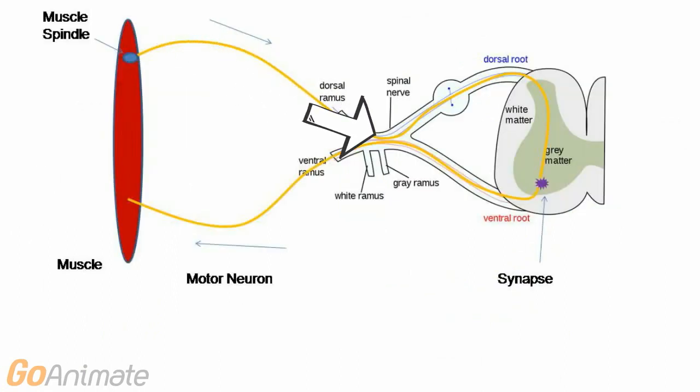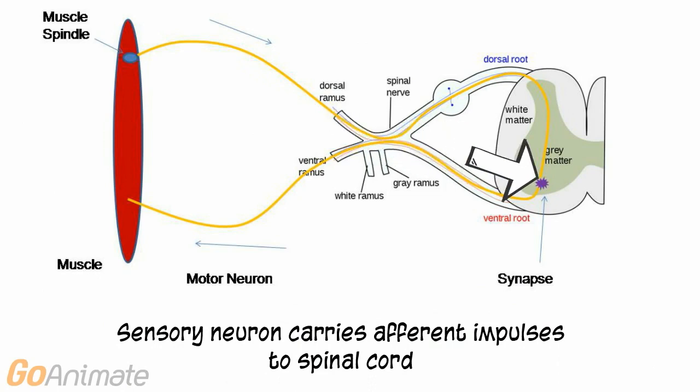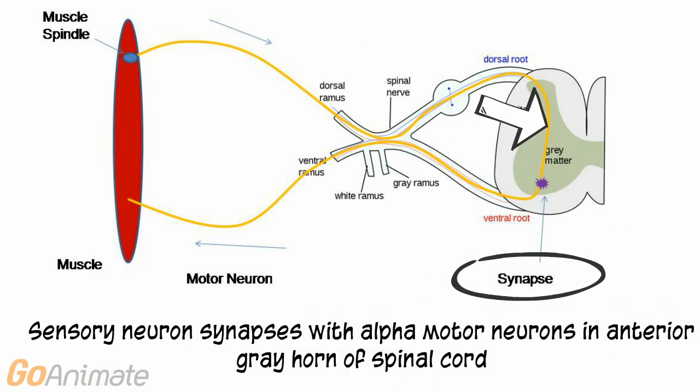The muscle spindle sends afferent impulses to the spinal cord via a sensory neuron. The sensory neuron synapses with alpha motor neurons in the gray matter of the spinal cord at the anterior horn.